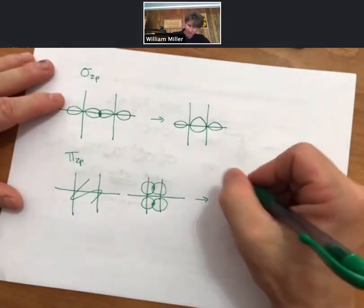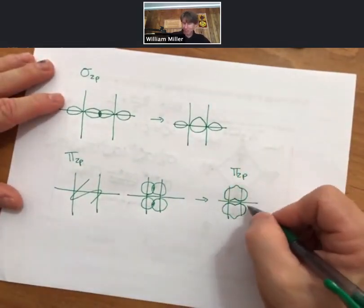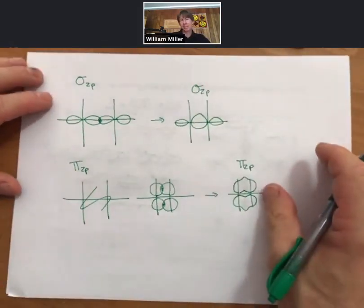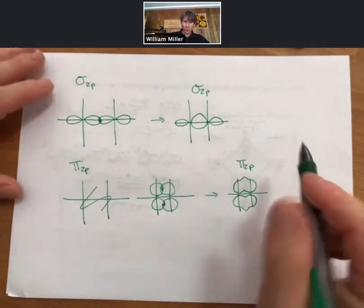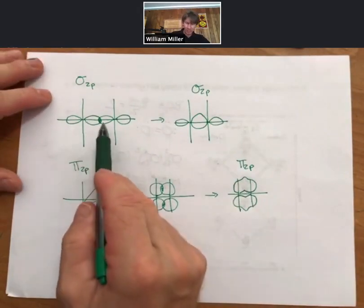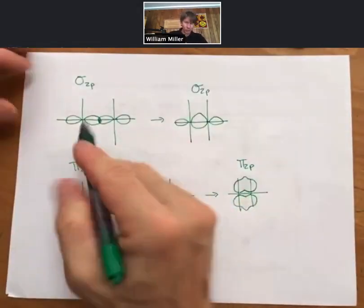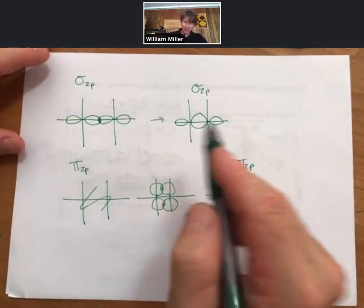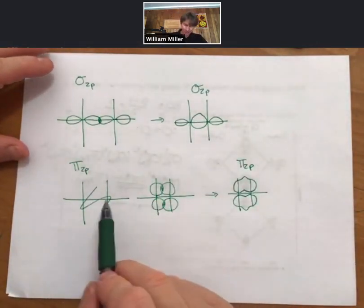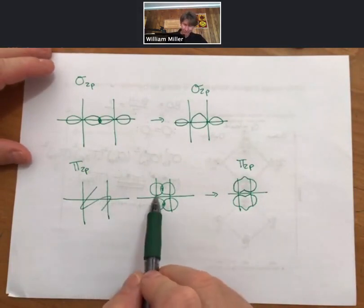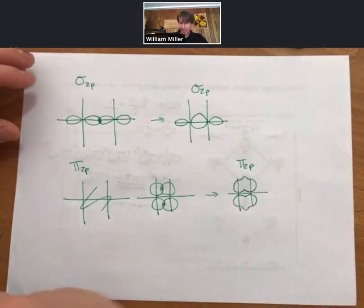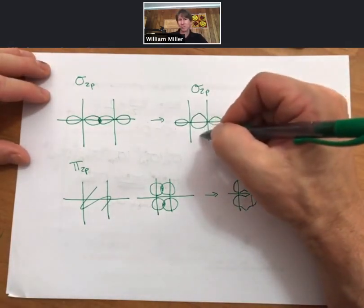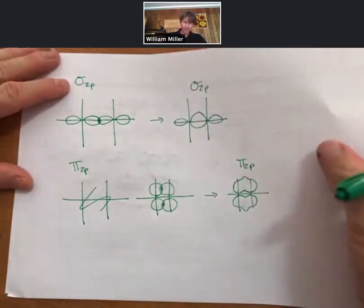This is going to be pi 2p molecular orbital. This is going to be sigma 2p. The process is always the same: take the orbitals, smash them together, where they overlap make it bigger. If we were to do star antibonding, there'd be nodes right halfway between the two nuclei.